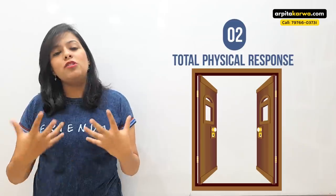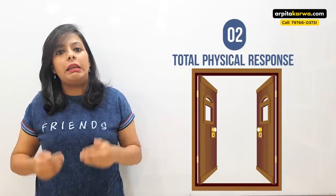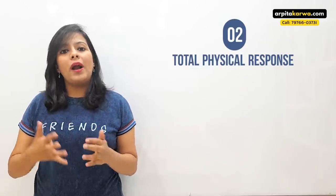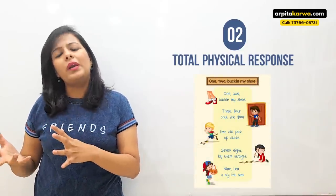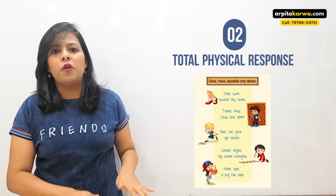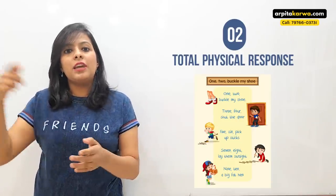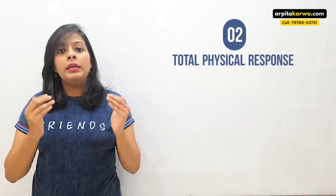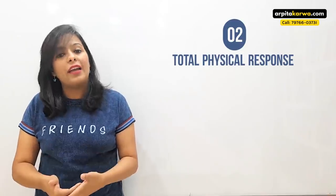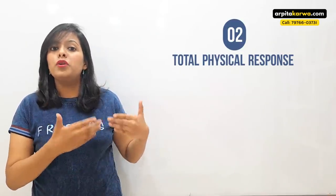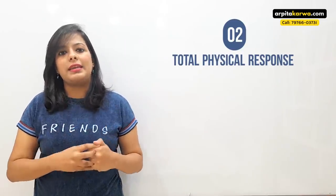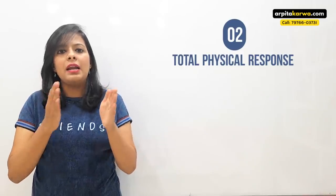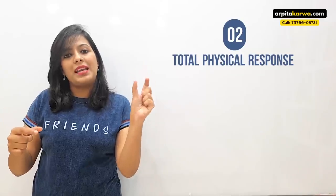Total Physical Response is very kinesthetic — children are asked to actually do things so they learn quickly. Nursery rhymes like 'One Two Three Buckle My Shoe' are also about doing things: sit down, get up, eat this, give it. This is how children learn, closely connected to child psychology. This is the best method parents use to teach a language to their kids, building strong neural connections between actions and associated vocabulary.